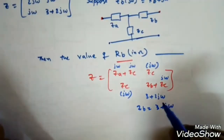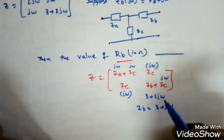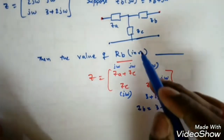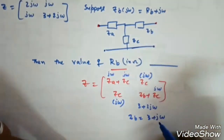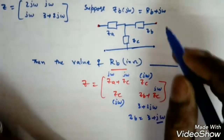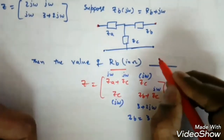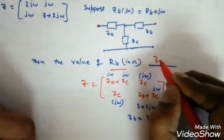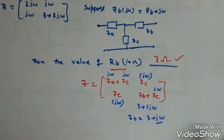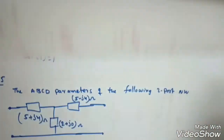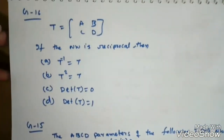So Zb + Zc = 3 + jω + jω = 3 + 2jω, confirmed. Since Zb = Rb + jω, comparing gives Rb = 3 ohms. Just a simple comparison is needed. Next question: GATE 2016 — for T-parameters matrix [A B; C D], if the network is reciprocal, find the condition.